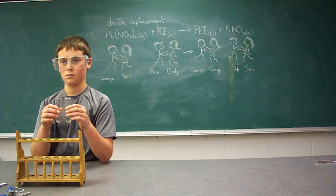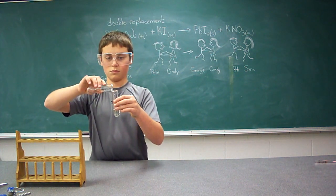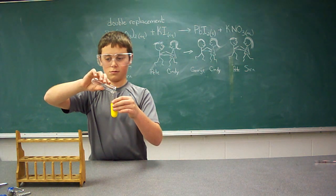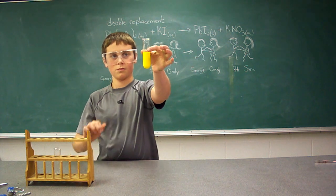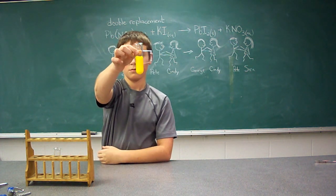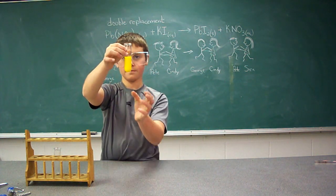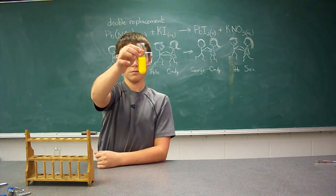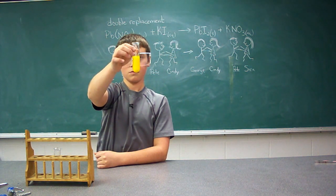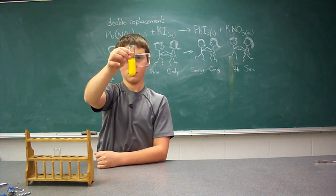In this reaction we're going to use lead nitrate and potassium iodide as our two reactants. We started out with two clear aqueous solutions, and as they combined we created two new products: potassium nitrate as an aqueous solution, and lead iodide, which is a solid bright yellow precipitate that begins to settle to the bottom.